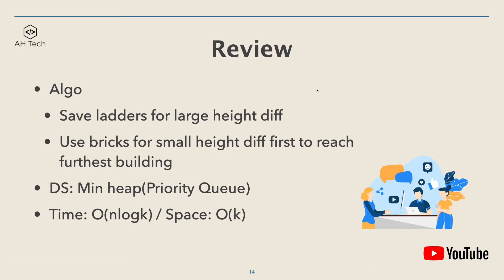To review: the key algorithm is that we want to save ladders for large height differences and use bricks for small height differences first, in order to reach the furthest building. The data structure we use is a minimum heap or priority queue. The time complexity is O(n log k) and the space complexity is O(k).